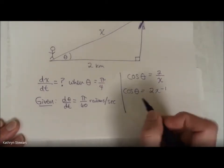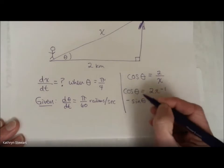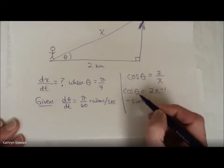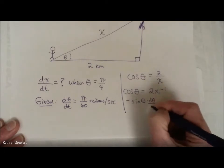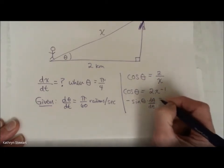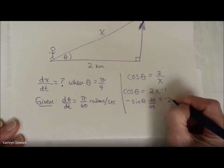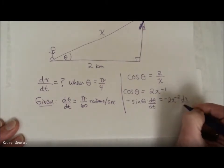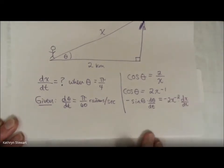Derivative of cosine is negative sine. And I'm taking the derivative with respect to time. So the chain rule kicks in. The derivative of the outside is negative sine of theta, but the derivative of the inside is the derivative of theta. The derivative of theta is dθ/dt. Derivative of 2x to the negative 1, where time is my independent variable, it's going to be negative 2x to the negative 2, and then times the derivative of x, which is dx/dt. Again, time is my independent variable, so I have to use the chain rule.